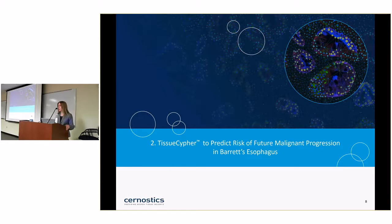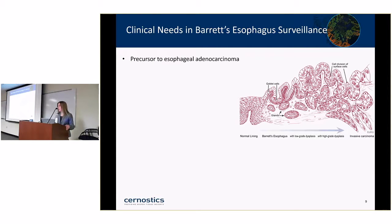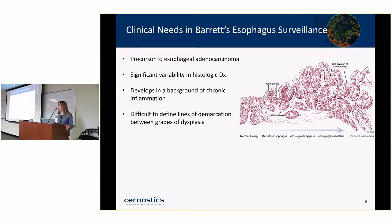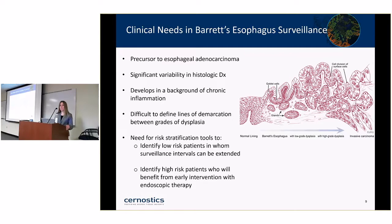Our lead product is a Tissue Cipher test to predict risk of future malignant progression in Barrett's esophagus. Barrett's is a precursor to esophageal adenocarcinoma, developing through non-dysplastic Barrett's, low-grade dysplasia, high-grade dysplasia, and then cancer. People with Barrett's are surveilled by upper GI endoscopy with biopsies to detect dysplasia early. However, there's significant variability in histologic diagnosis, and current surveillance programs are mostly ineffective. There's a need for risk stratification tools—to identify low-risk patients for extended intervals and high-risk patients for early intervention with approved endoscopic therapies.